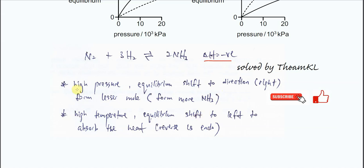Let's first discuss the effect of pressure. If high pressure is used: on the left-hand side, the total moles is 4, and on the right-hand side it is 2. Since 4 moles gives more pressure than 2 moles, when high pressure is used, the equilibrium will try to reduce the pressure by shifting to the right-hand side, forming fewer moles.